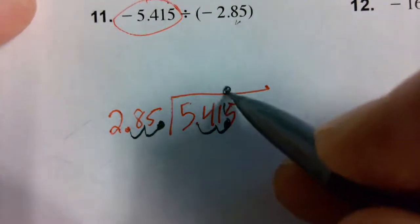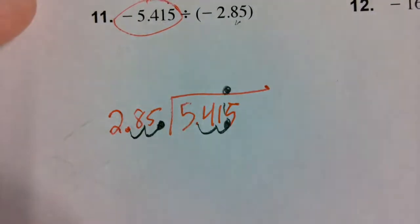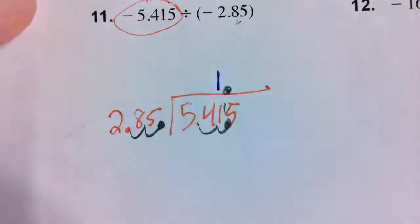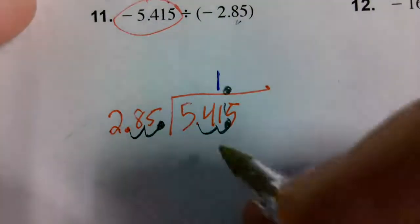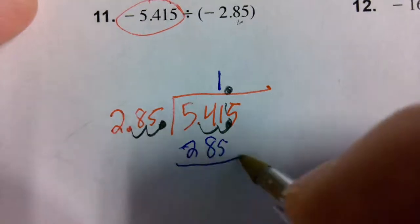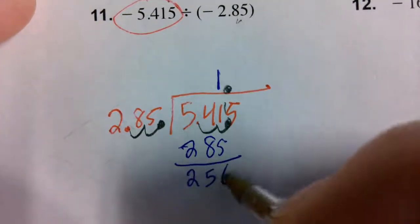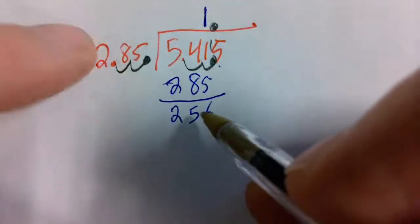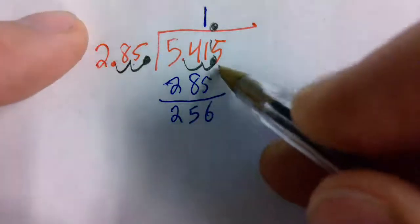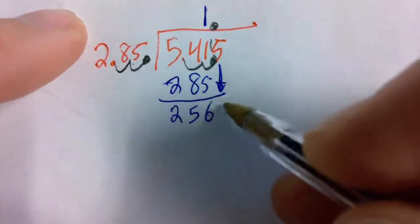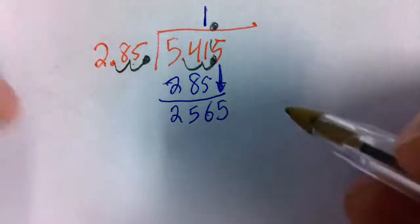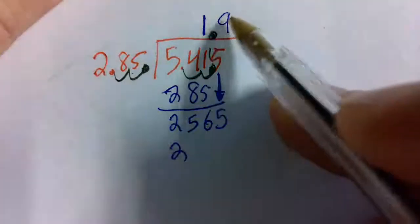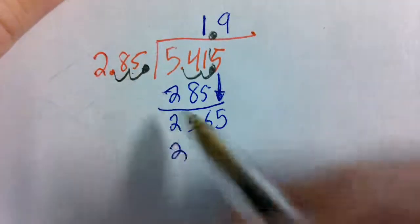I'm going to help you with this one. 285 goes into 541 one time. Minus 285, you're left with 256. Notice how your remainder is smaller than your divisor. Bring the 5 down. Instead of having to guess and check on your own, I'm going to tell you it goes in there nine times. Nine times 285 is 2565.